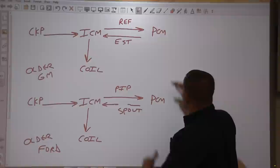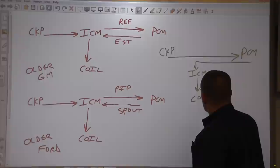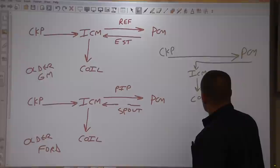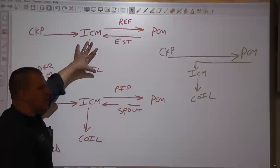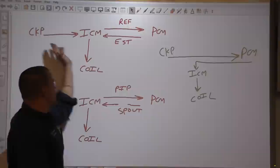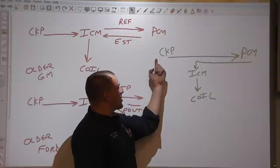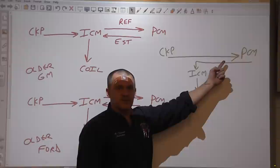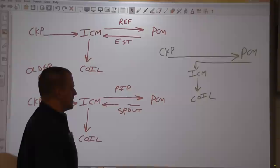A newer GM design has the crank signal going directly to the PCM, the PCM controls the ICM, and the ICM controls the coil. Notice the difference from the older bypass design. If you have a no-spark or no-injection-pulse situation, you'd treat these two designs differently. On the older bypass design, it's possible to have a faulty PCM and still have good spark. On the newer design, it's not possible — the computer is in control all the time. To know what you're dealing with, grab a wiring diagram. If the crank sensor signal goes directly to the PCM, it's not a bypass system. If it goes to the ICM, it's a bypass system.